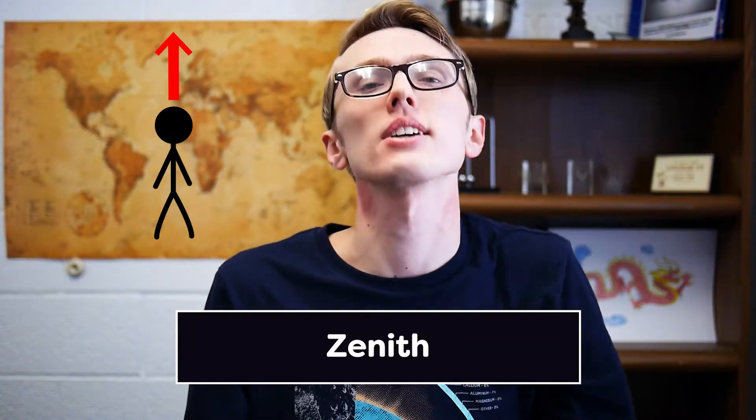Up here in the northern hemisphere, to find a planet we have to look along the ecliptic. Where is the ecliptic? It depends on where you are on Earth. This leads me to our next term: zenith. Zenith means directly above you — straight out of your head, whatever's up there — and it could be different depending on where you're standing. The opposite of zenith is nadir, which means directly below you.